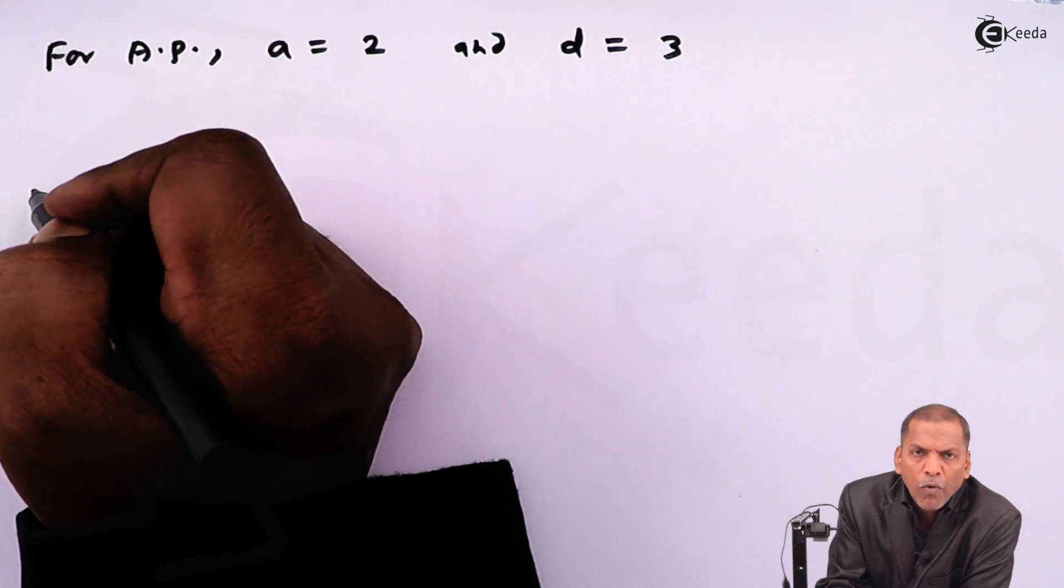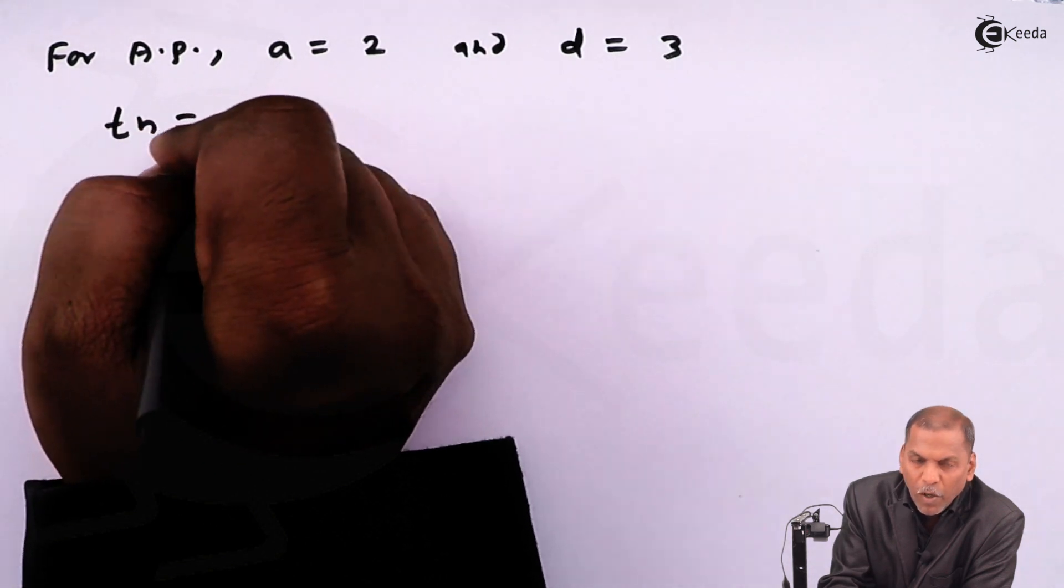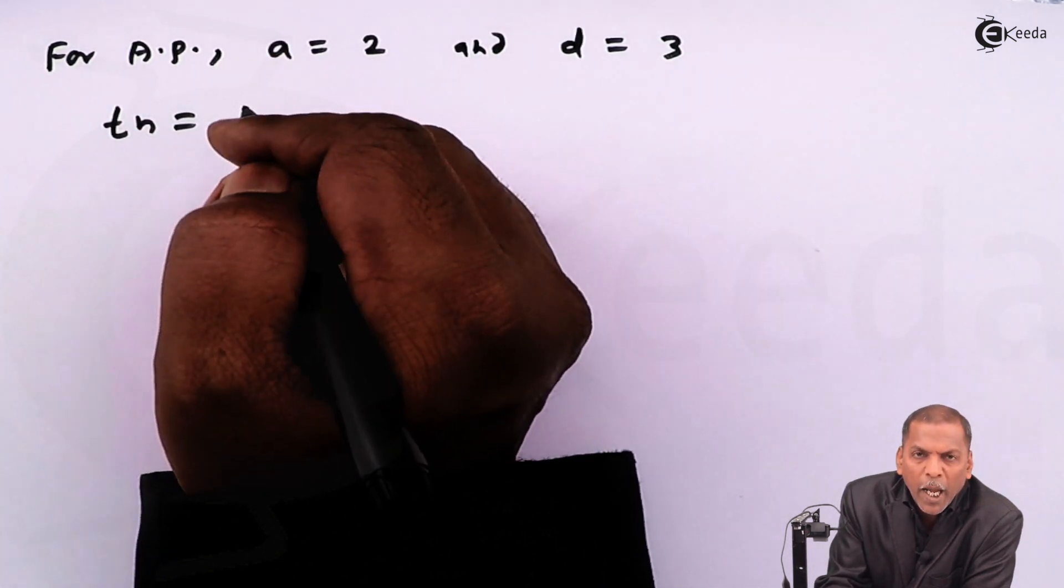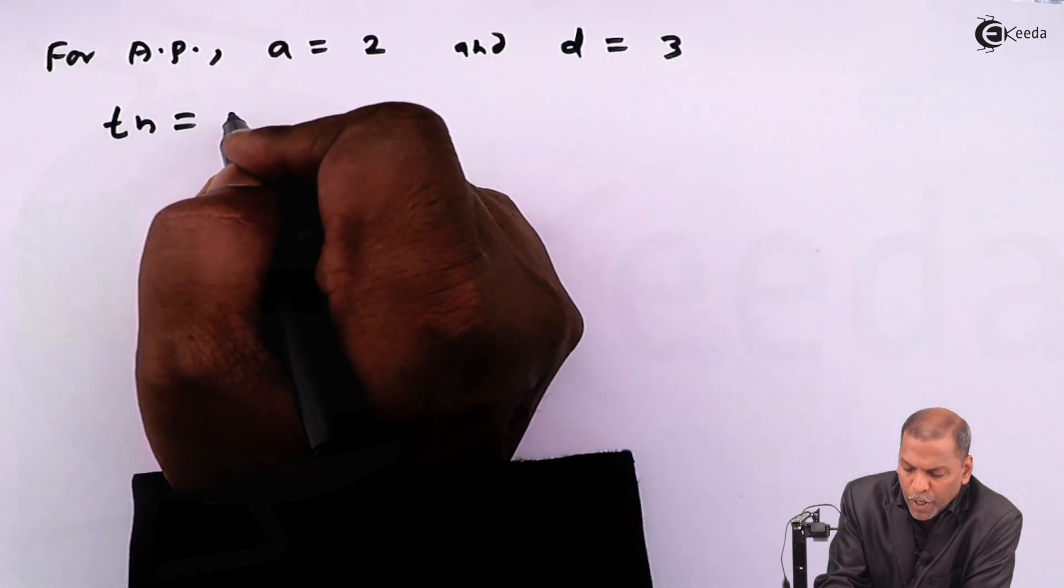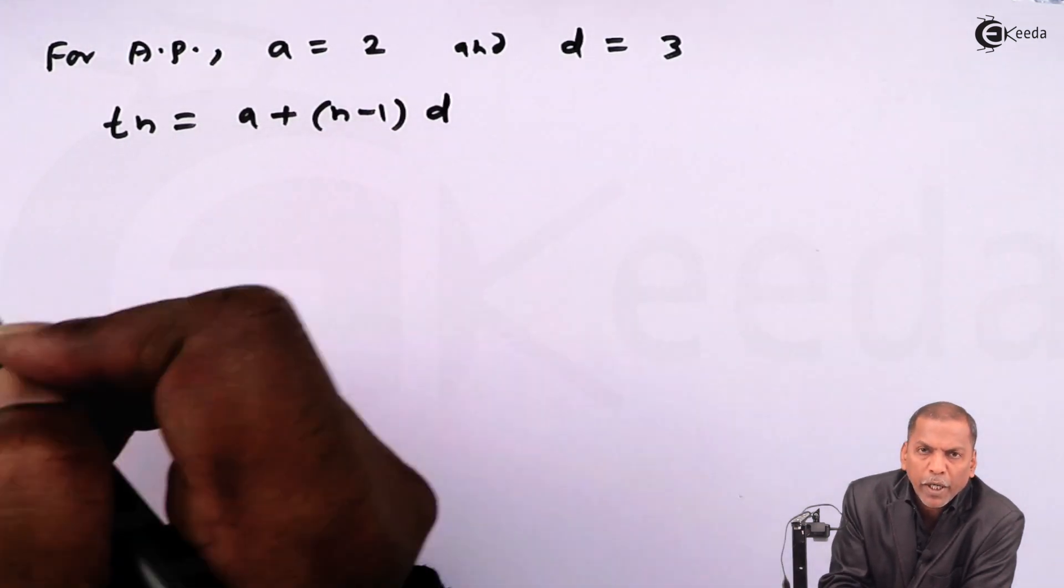Now we write formula for TN. TN, that is nth term of AP, is equal to A plus N minus one into D.